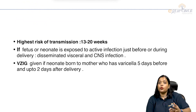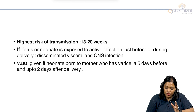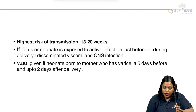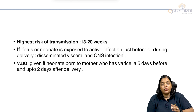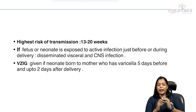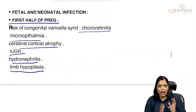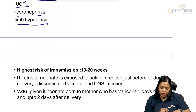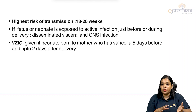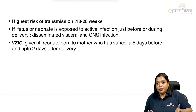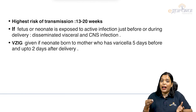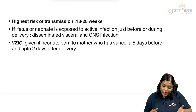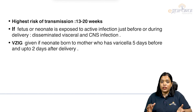The highest risk of transmission to the fetus is between 13 to 20 weeks of gestation. A second modality of transmission is during delivery. If the fetus or neonate is exposed to active infection just before or during delivery, the baby can have disseminated visceral or CNS infection.